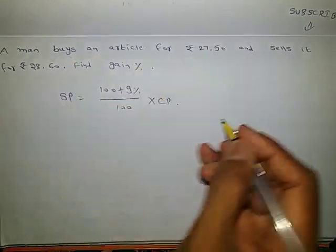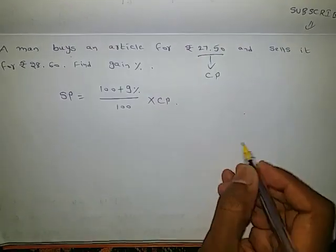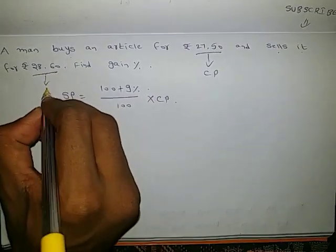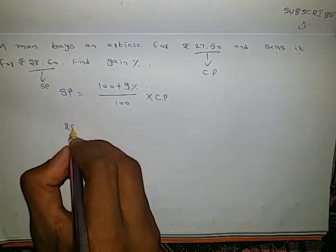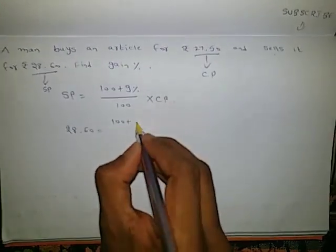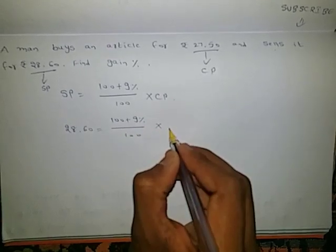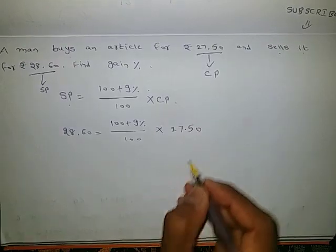A man buys an article, so this will become cost price, and sells it for this amount, so this will be selling price. So 28.60 equals 100 plus gain percentage, we don't know, by 100 into cost price, which is given as 27.50.